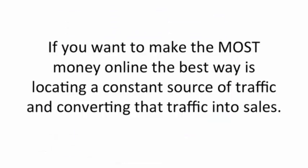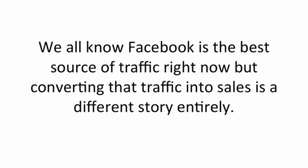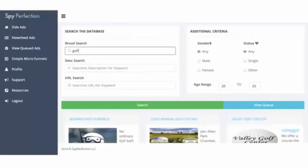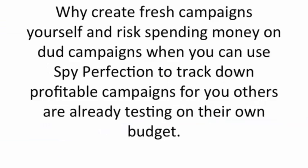If you want to make the most money online, the best way is locating a constant source of traffic and converting that traffic into sales. We all know Facebook is the best source of traffic right now, but converting that traffic into sales is a different story entirely. It takes time to create a campaign for Facebook that will deliver results. Enter the Spy Perfection campaign locator. This unique technology allows you to within seconds locate thousands of potentially profitable campaigns running on Facebook. Let me show you how.